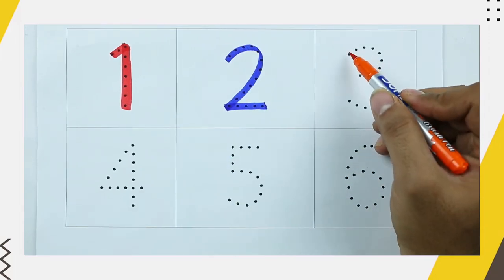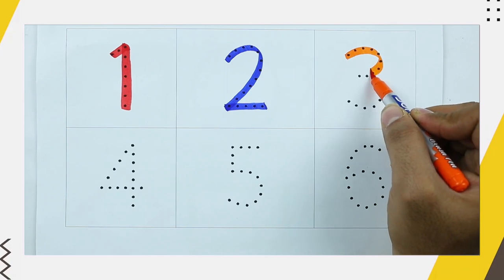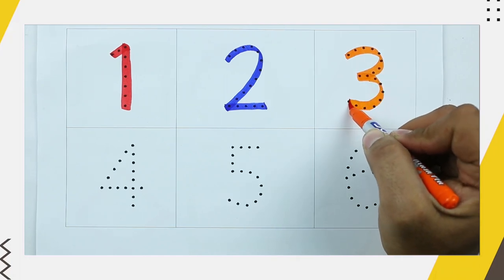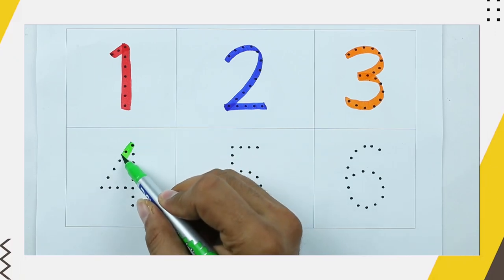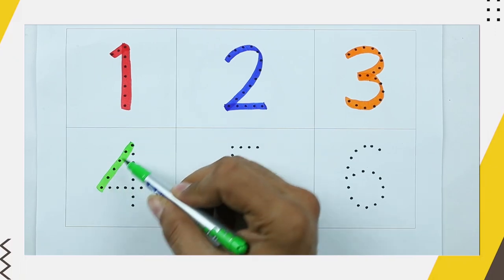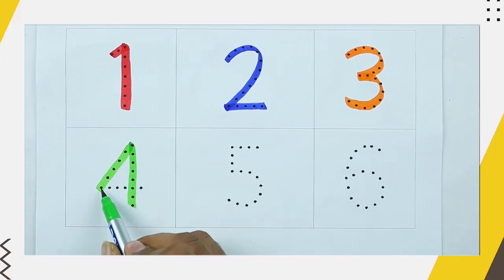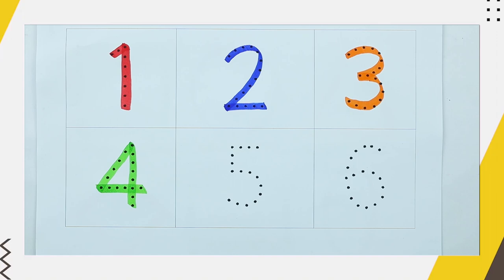It's number 3 — yes, 3 is with orange color. It's number 4 with green color.